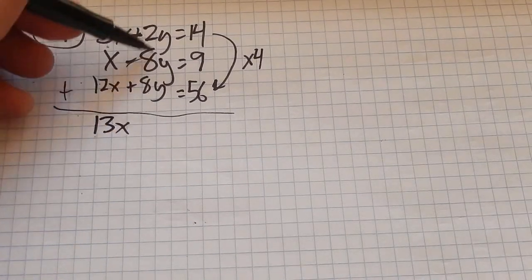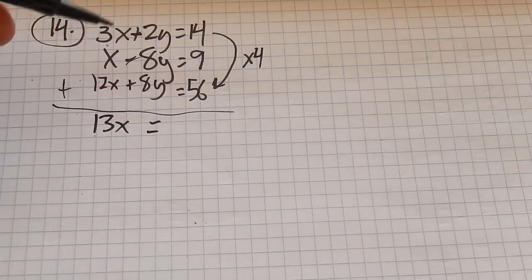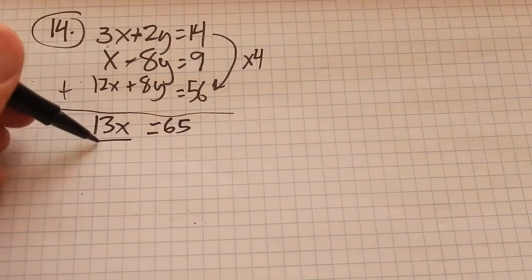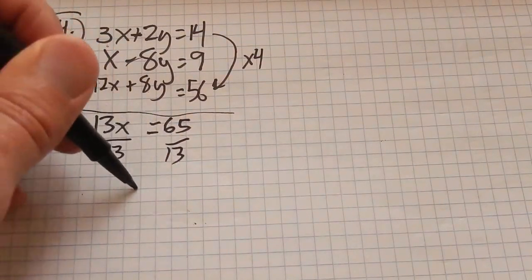So, 13x, y's cancel out, which is what I wanted to happen. 9 plus 56 is 65. Divide both sides by 13. Looks like x is 5.